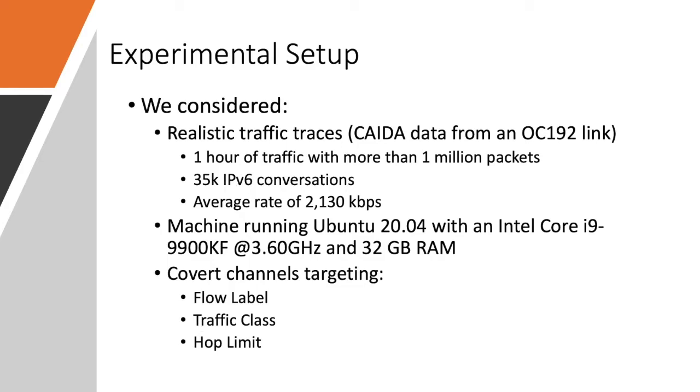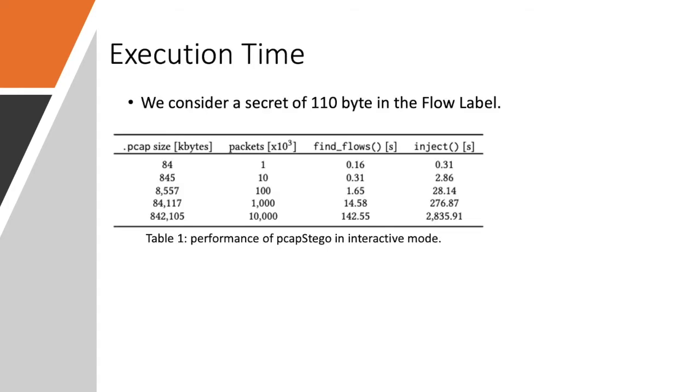To prove the effectiveness of pcapStego, we prepared an experimental setup considering realistic traffic traces collected by CAIDA from NOC 192 link with more than 35,000 IPv6 conversations. And we executed the pcapStego using a machine running Ubuntu 20 with an Intel Core i9. We considered all the three injection mechanisms that are available. So, the flow label, the traffic class and the hop limit.